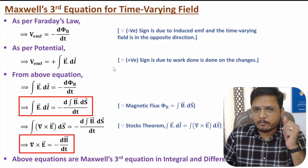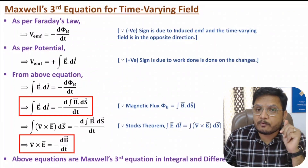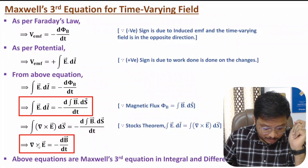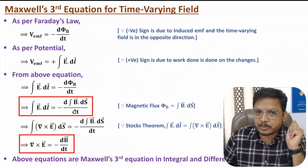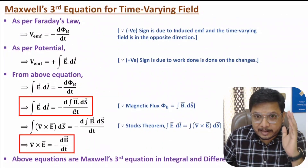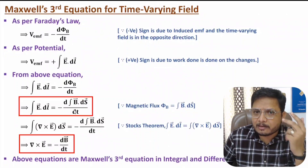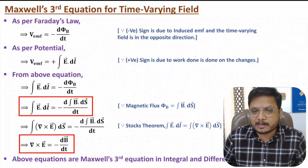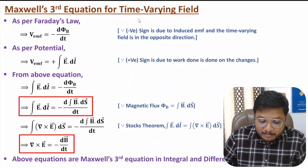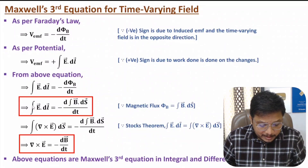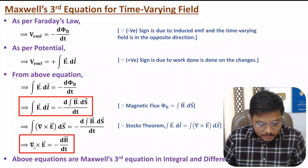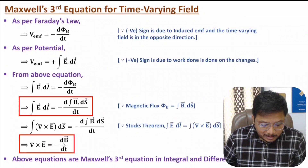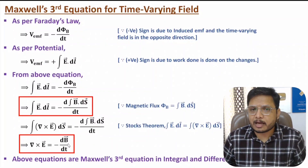Always remember: for a static, non-time-varying field, del cross E equals zero, and the line integral of E·dl equals zero. In this video we are talking about time-varying field, where the integral form contains induced EMF and the differential form is del cross E equals minus dB/dt.